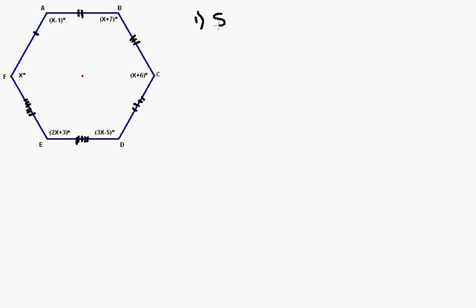To find the sum of the interior angles of this hexagon—this by the way is a hexagon—the sum of the interior angles is equal to the quantity, the number of sides, that's what N stands for, the number of sides minus 2, times 180.